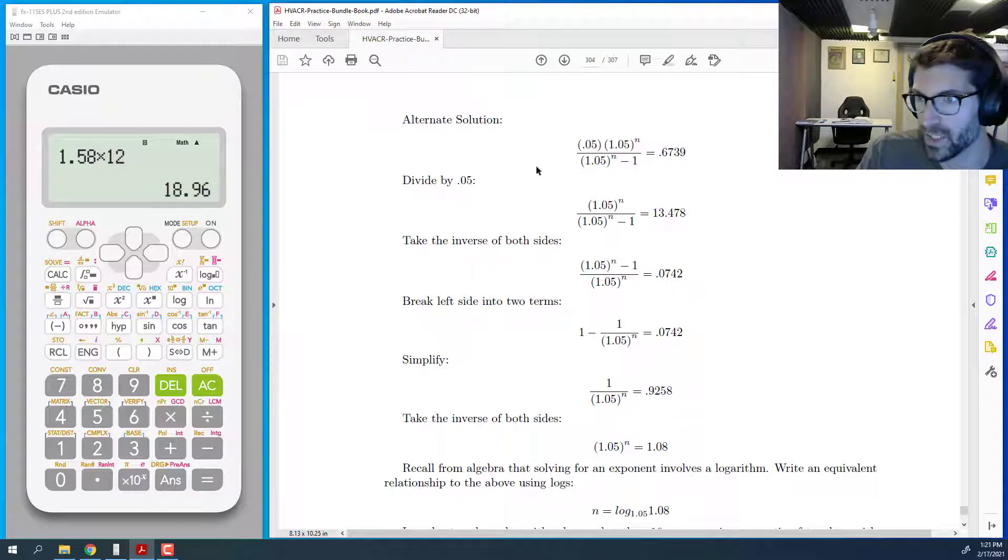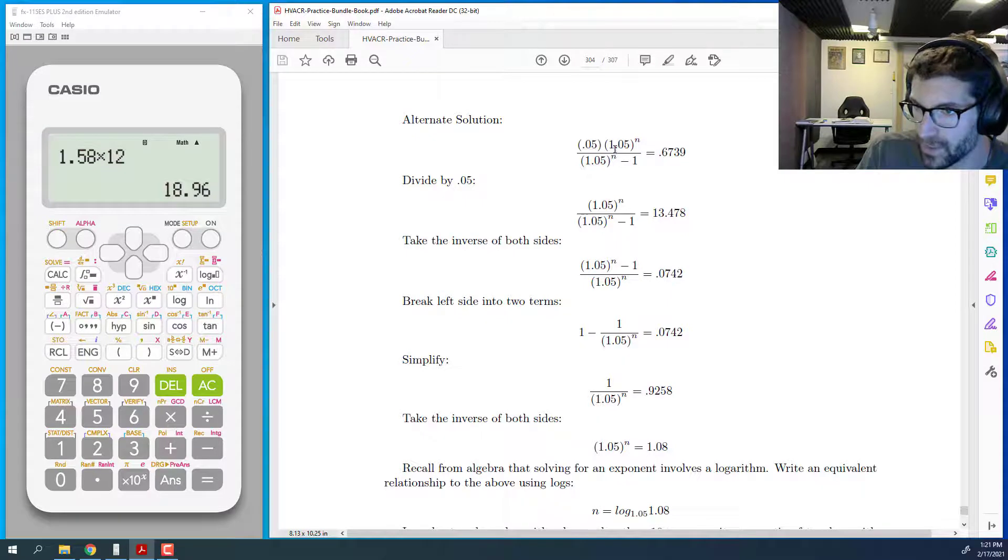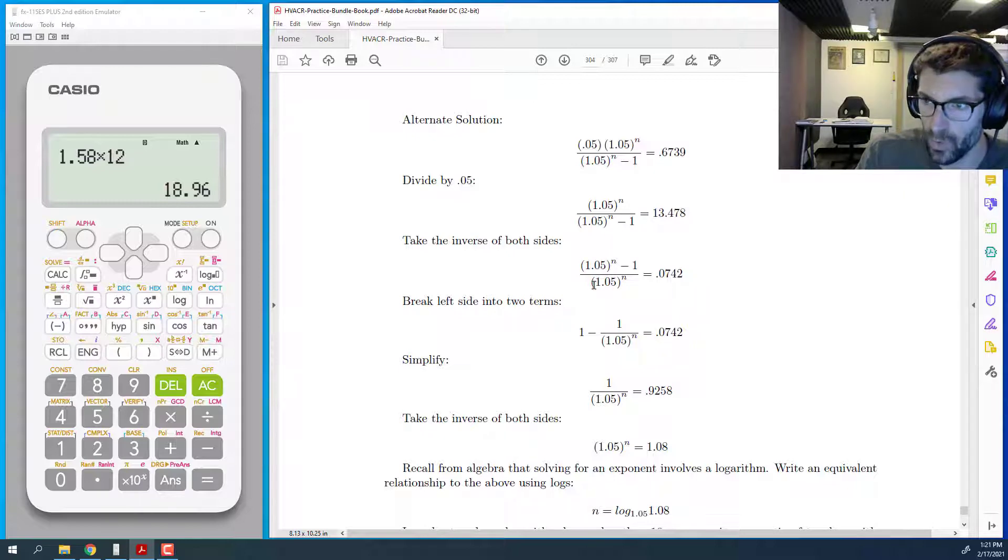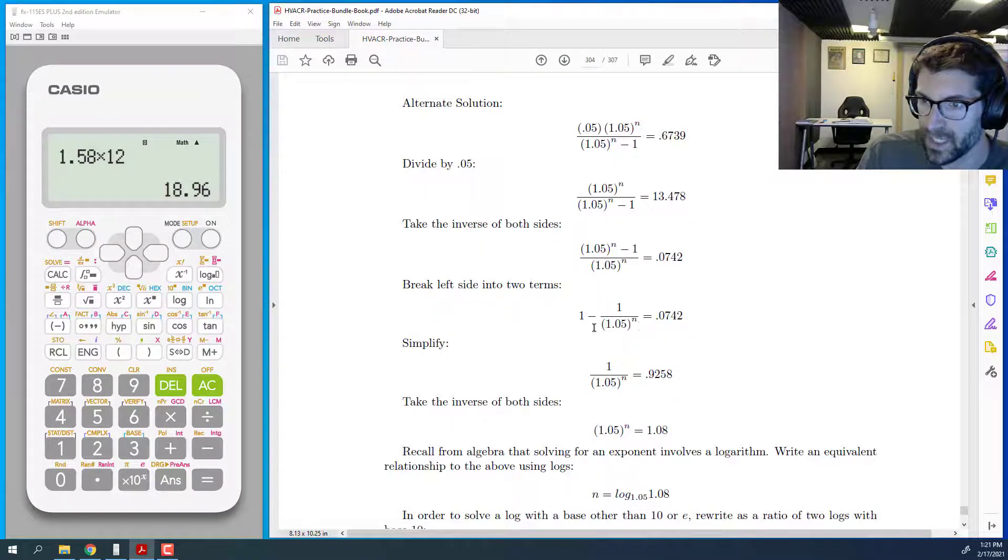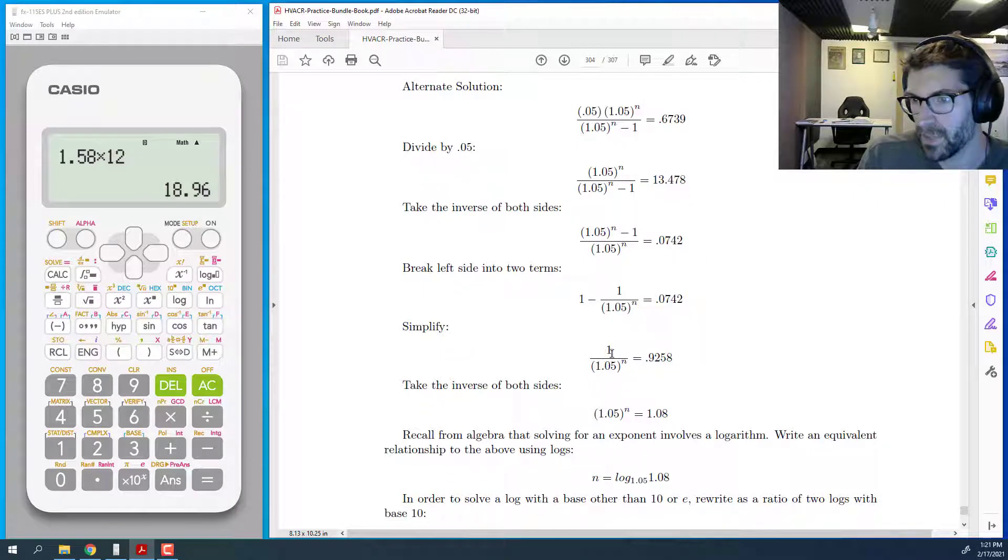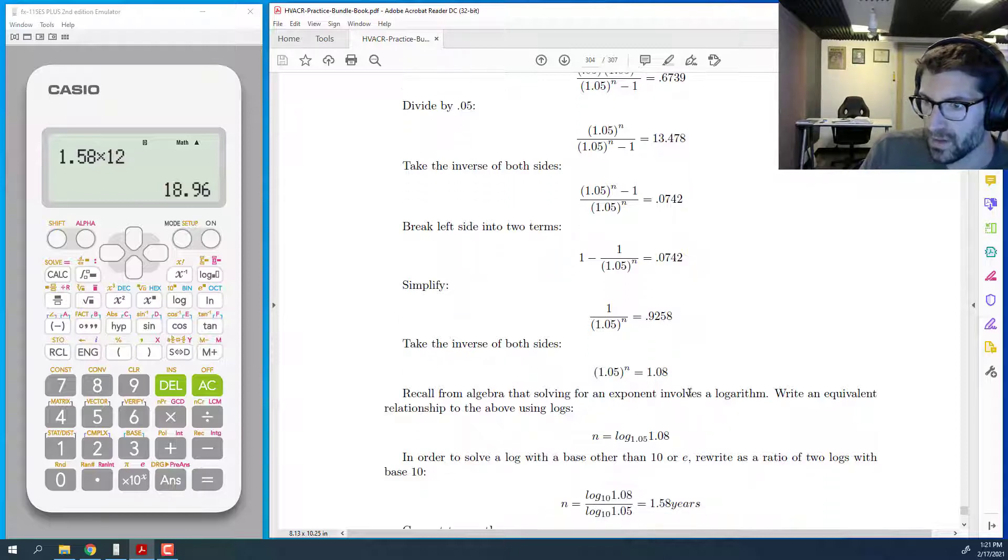But the actual rigorous way to go through it here is to start by sort of rearranging the left side, divide by 0.05. Then we take the inverse of both sides to get this 1.05 to the n on the bottom. And then you'll notice 1.05 to the n over 1.05 to the n can be expressed as 1 minus. So now we've kind of split this into two terms. And then we're able to subtract the right side and get a number, 0.9258. And then the left side is just left looking like this. And now we can take the inverse to get 1.05 to the n on top. Right?